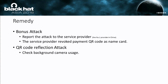After finishing the disclosure, we reported the attacks to their service providers, including the largest mobile payment service provider in China. That service provider immediately revoked the use of the payment QR code as a name card in around a week after our report. For the reflection attack, they committed to do a background check to ensure that there is no background application using the front camera when a transaction is ongoing.